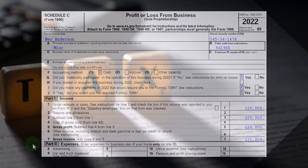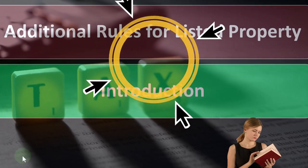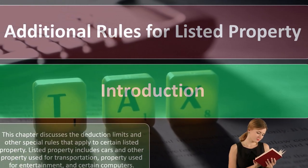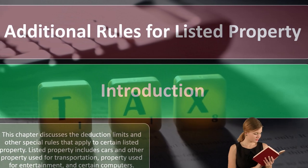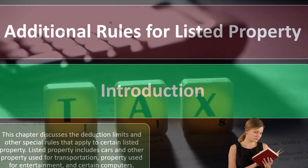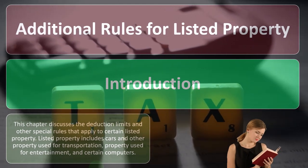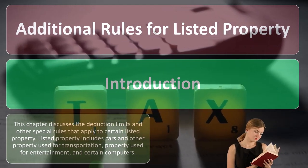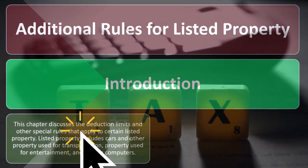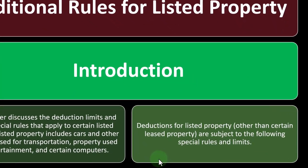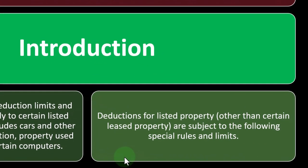So now we're going to go into the special rules — additional rules for listed property. Introduction: this chapter discusses the deduction limits and other special rules that apply for certain listed property. Listed property includes cars, probably the big one, and other property used for transportation, property used for entertainment, and certain computers. Deductions for listed property other than certain leased property are subject to the following special rules and limits.